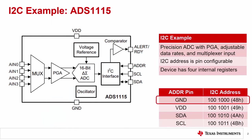For this example, we will look at the ADS-1115, which is a 16-bit precision ADC. It uses an I2C interface and is capable of standard, fast, and high-speed modes. It has several different settings that can be set through a configuration register, including the input range set by a programmable gain amplifier, or PGA, a variety of data rates, and an input multiplexer that can be set to make differential measurements or single-ended measurements with respect to ground.